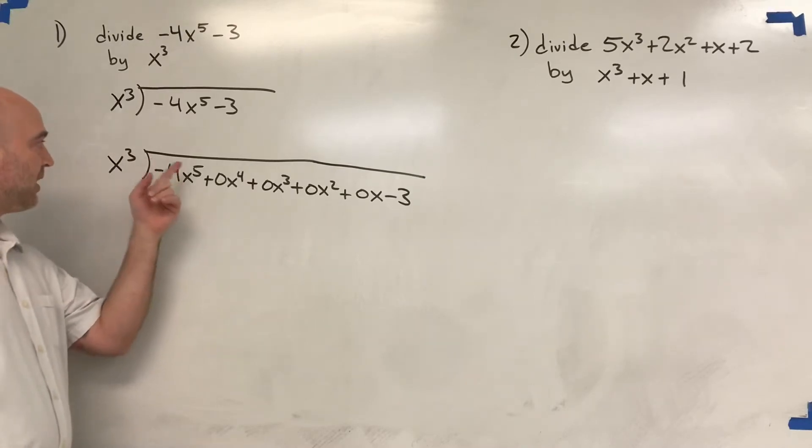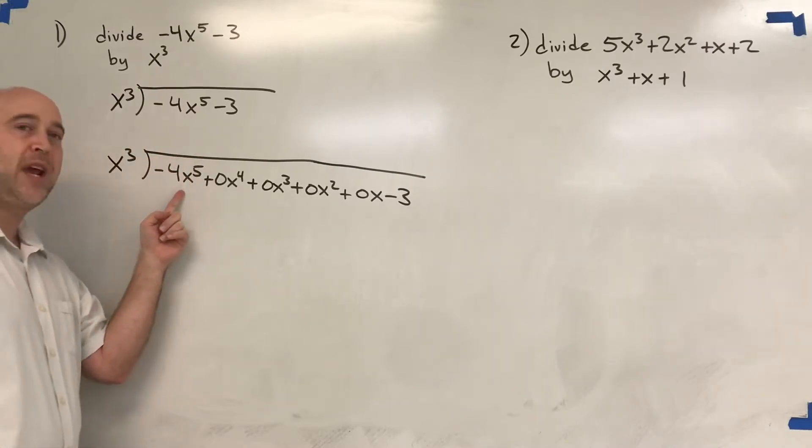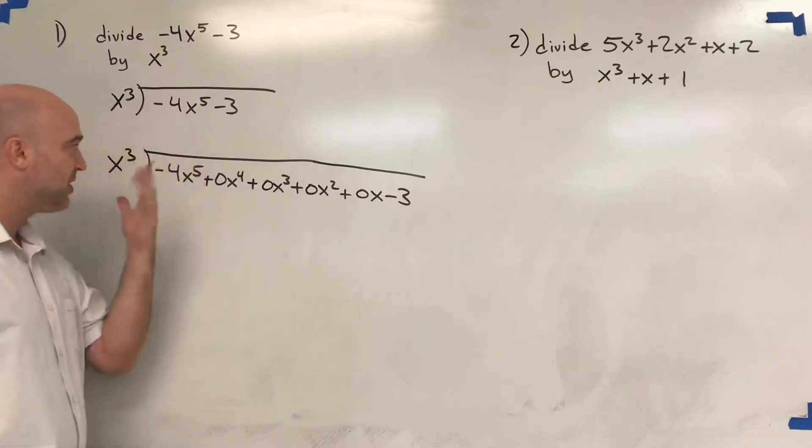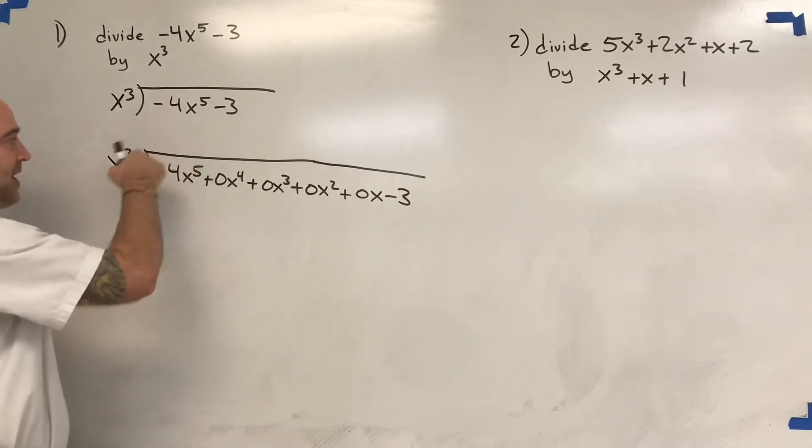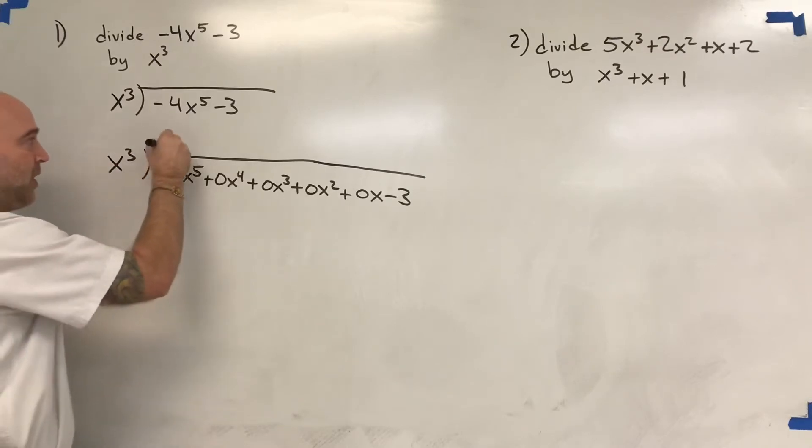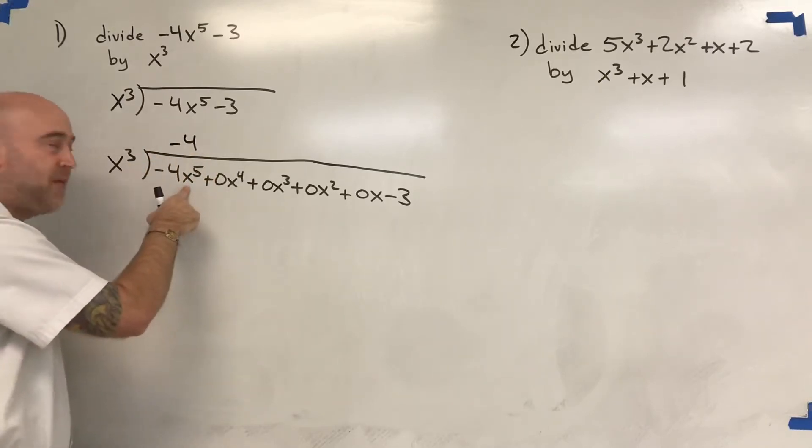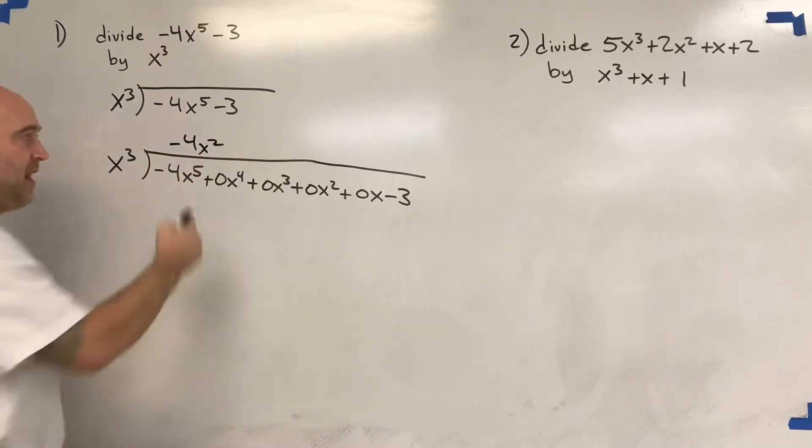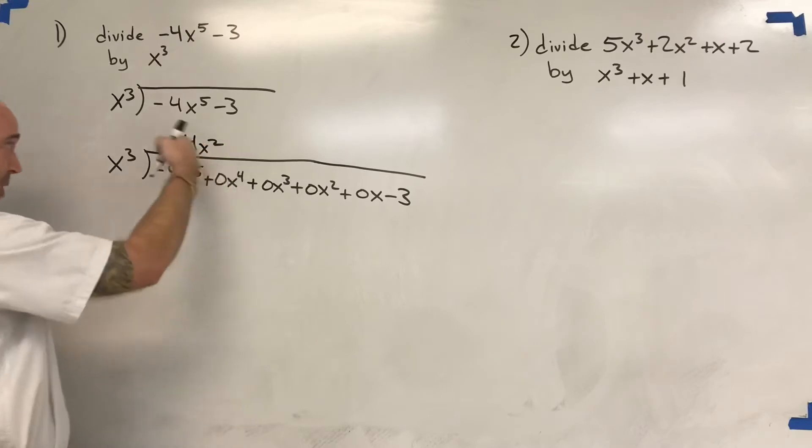I would say x cubed times what equals negative 4x to the 5th. You can also divide negative 4x to the 5th by this one, and it'll give you the same answer. But just mentally, in my head, it just makes more sense that way. So I would say what times 1 is negative 4? Well, negative 4 times 1 is negative 4. What times x cubed is x to the 5th? x squared times x cubed is x to the 5th. And then I just confirm negative 4x squared times x cubed is negative 4x to the 5th. So I'll go ahead and multiply it.